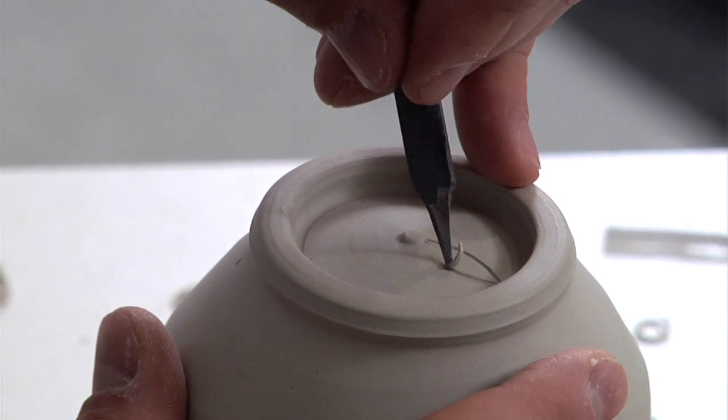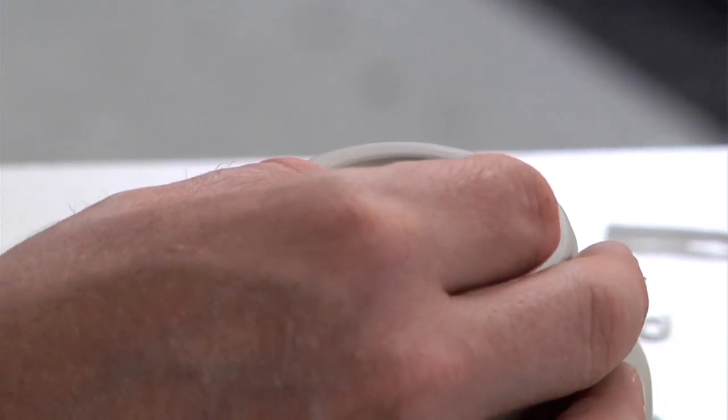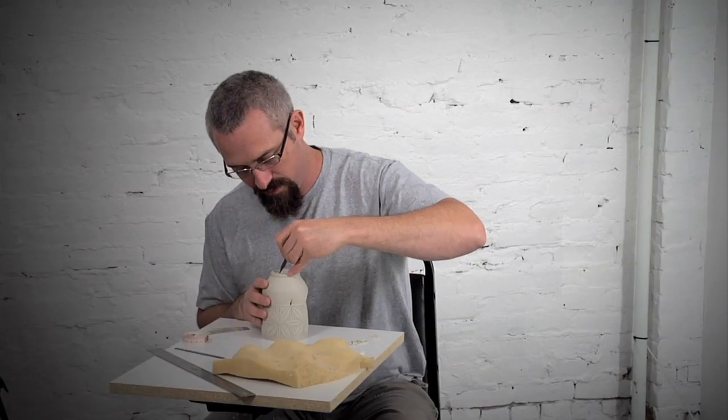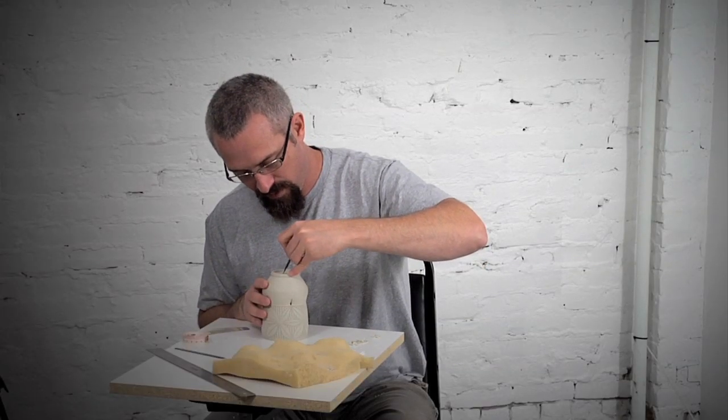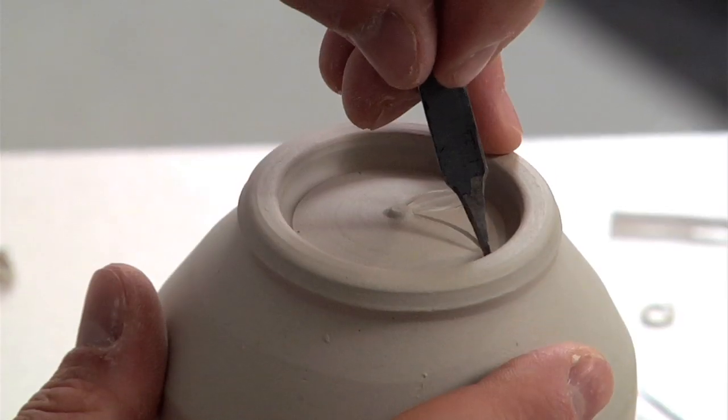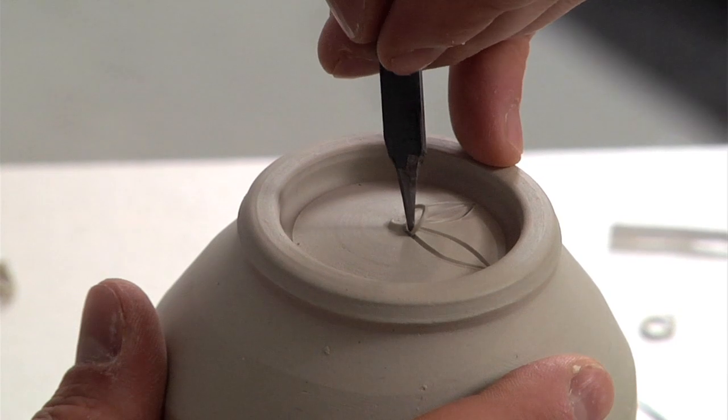I'll usually wait a bit because the bottom of the pot is usually the wettest spot, and so it's often too wet to really get a good carved line if you try to do it at the same time that you carve the top. I'll just set them aside for a few hours and come back to them.